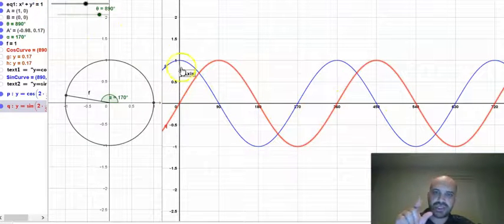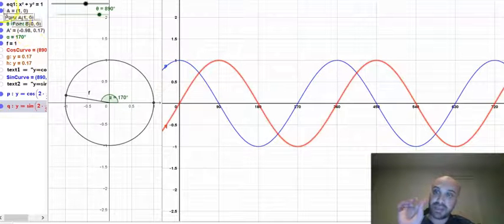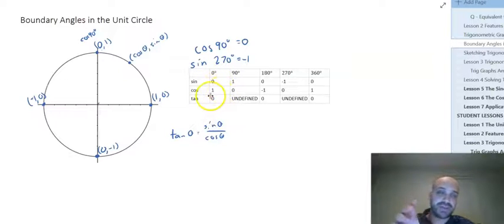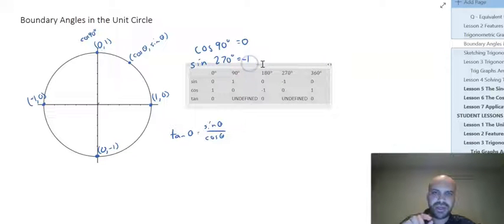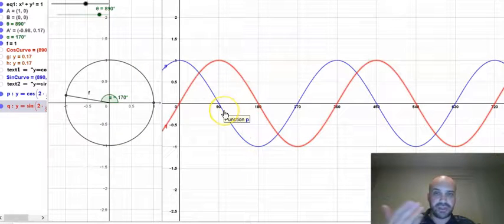Now, in order to sketch these by hand, it's going to be easiest to keep something else in mind. These boundary angles. We've talked about boundary angles before. Sine 0 degrees equals 0, sine 90 degrees equals 1 and so on. Now, with this table alone, it's relatively easy to sketch a trigonometric function given you know that they look roughly like this.